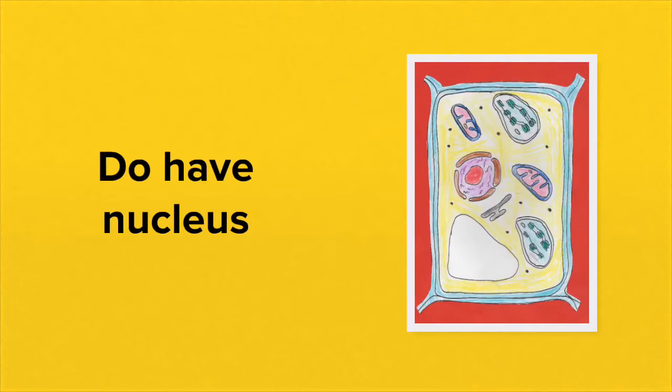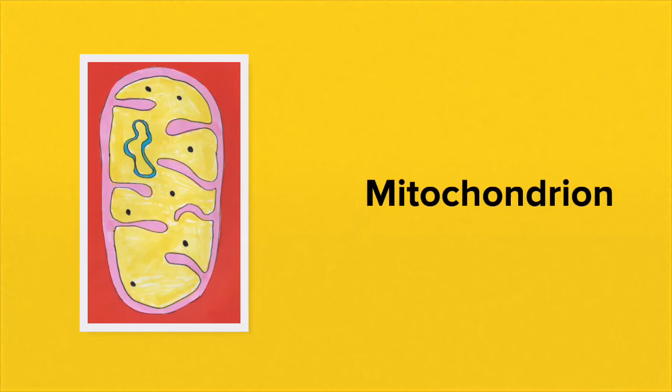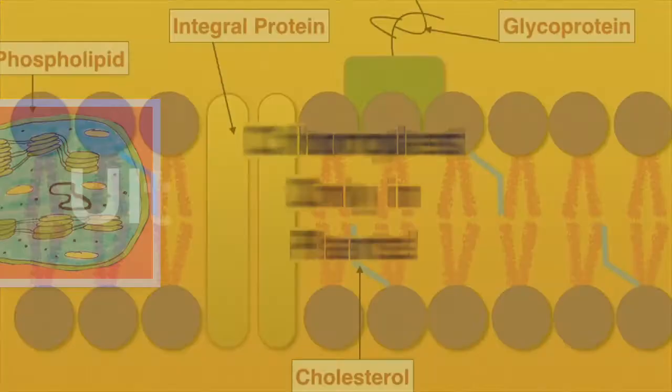Eukaryotic cells do have a membrane-bound nucleus and also contain membrane-bound organelles — for example, mitochondria found in both plant and animal cells, and chloroplasts found only in plant cells.